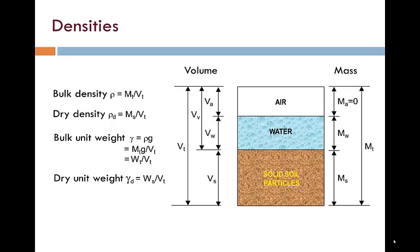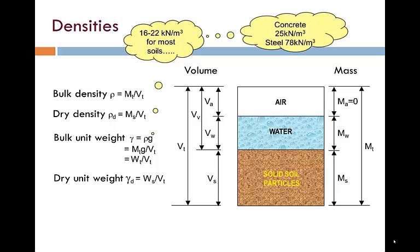In general, we prefer to use unit weights than densities in soil mechanics. The unit weight is the density times the acceleration due to gravity G, or alternatively, the unit weight is weight divided by volume. Bulk unit weights and dry unit weights can be calculated.